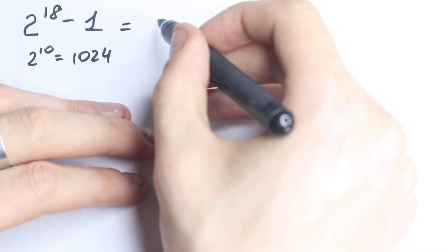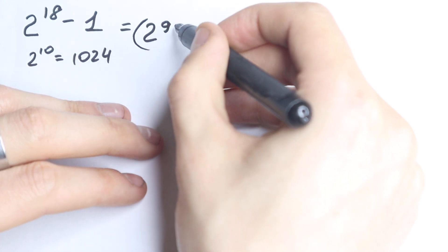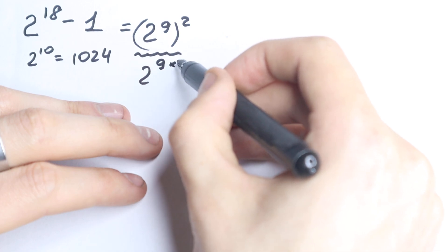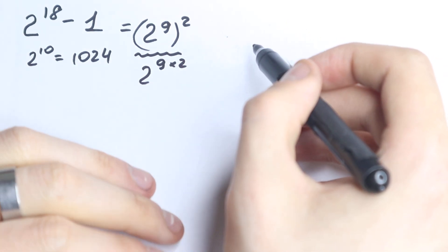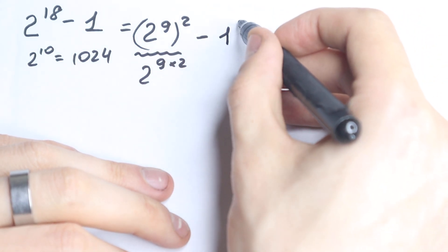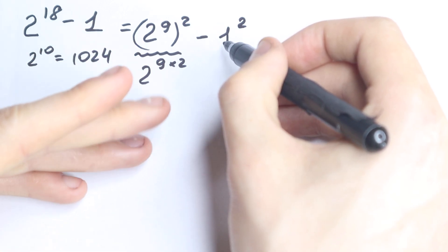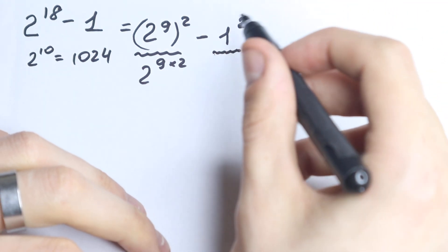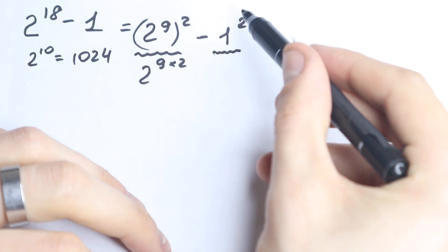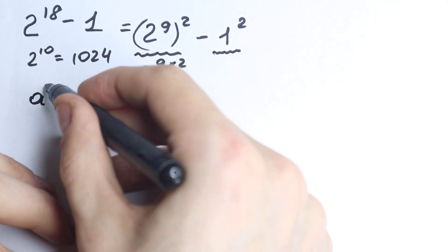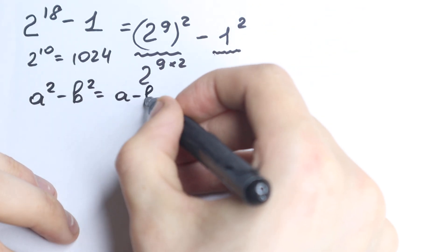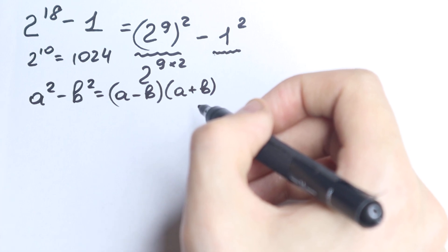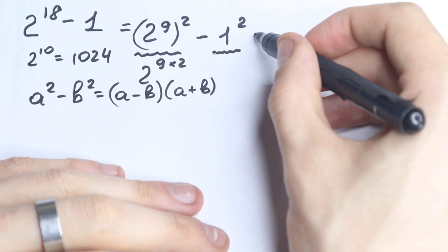Take a look closely: 2 to the power 18 equals 2 to the power 9, squared. We can write it this way, as (2^9)^2. And we can write 1 as 1 squared — nothing changed because 1 squared equals 1. Now this looks like a difference of squares. If we let a equal 2 to the power 9 and b equal 1, then we have a squared minus b squared, which equals (a minus b) times (a plus b). This is a really important identity formula.